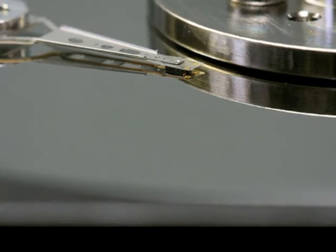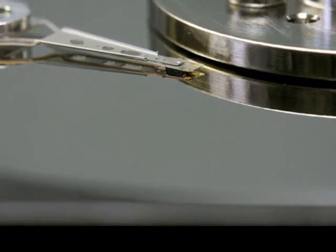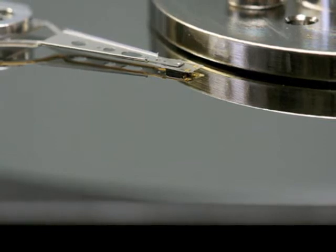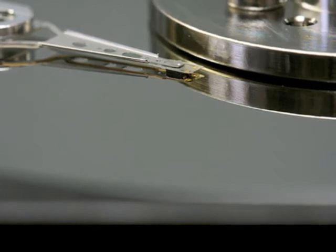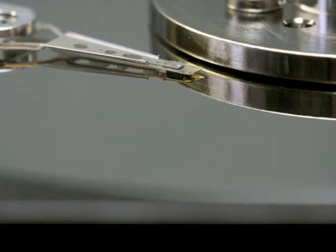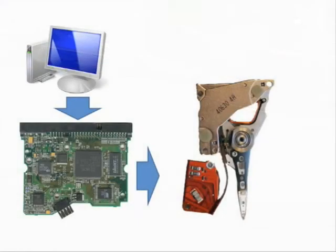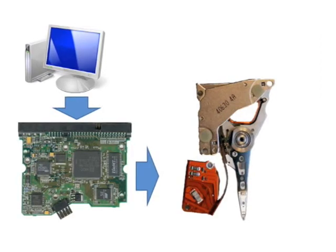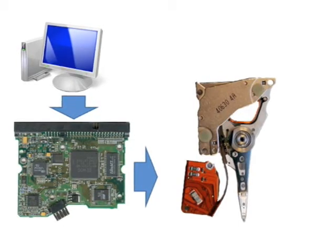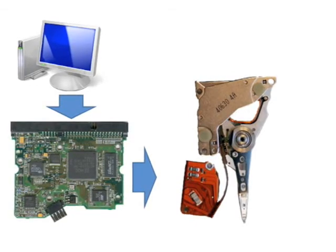Read-write heads never touch the surface of a platter — instead, they hover just over the surface. The actuator arm can move from the innermost to the outermost tracks of a platter by means of the actuator, the metal casing behind the actuator arm. The actuator contains a mechanism that uses an electric charge to move the actuator arm up and down over the platter. You'll see a ribbon cable coming out of the actuator that leads to the controller board. If you turn over your hard drive, you'll see a circuit board containing many electronic components and chips. These chips are responsible for telling the actuator where to move the actuator arm in order to read or write the data. Once the data has been written or retrieved, it is passed to the computer by the controller board.